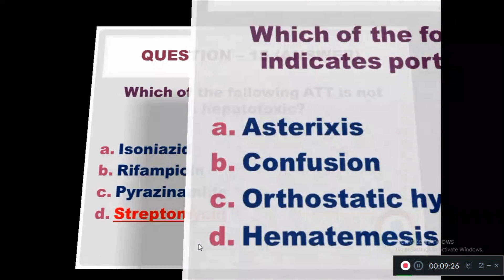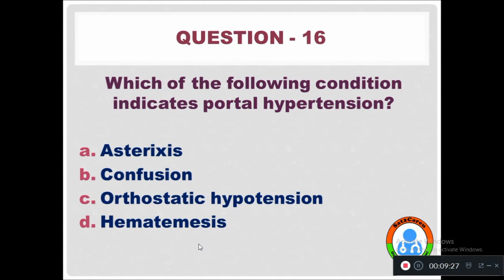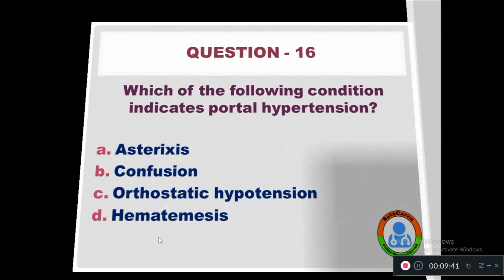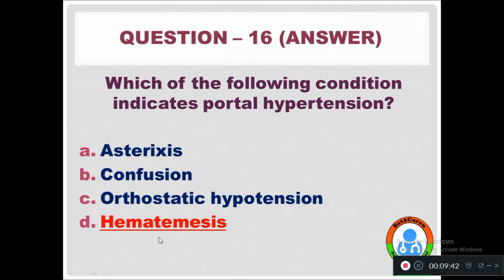Question 16: Which of the following conditions indicates portal hypertension? Option A: Asterixis. Option B: Confusion. Option C: Orthostatic hypotension. Option D: Hematemesis. The right answer is hematemesis — it represents portal hypertension.